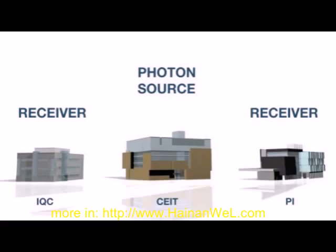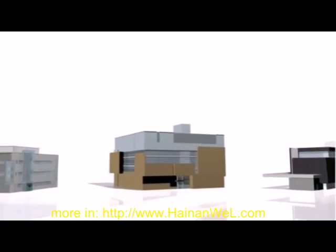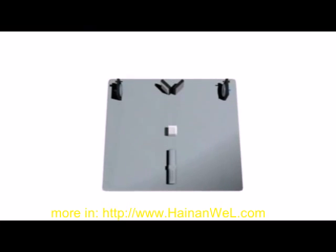The system consists of a source and two receiver stations. By convention, the parties who want to share information are known as Alice and Bob. In this case, they are located in two separate buildings with the source positioned between them. We'll start by taking a look at what happens at our source.